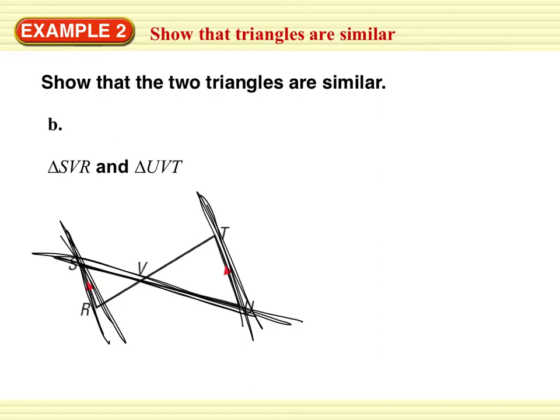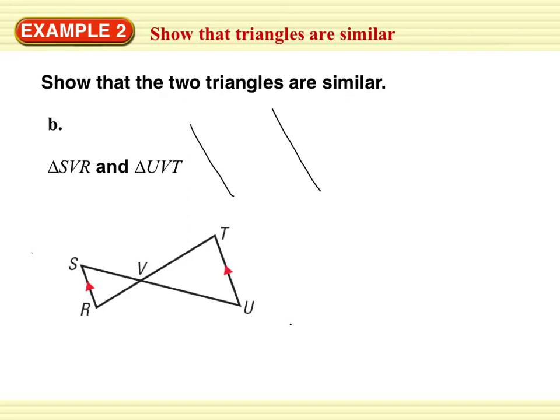If you remember parallel lines and transversals. If I have two parallel lines and the transversal, this angle and this angle is congruent. They're alternate interior. Or this transversal, alternate interior are congruent. And then let's not forget what these angles are called. Vertical angles are congruent.